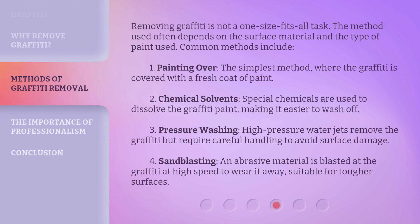Removing graffiti is not a one-size-fits-all task. The method used often depends on the surface material and the type of paint used. Common methods include: one, painting over — the simplest method, where the graffiti is covered with a fresh coat of paint; two, chemical solvents — special chemicals are used to dissolve the graffiti paint, making it easier to wash off.